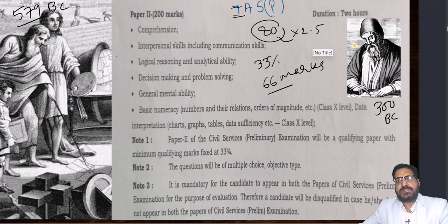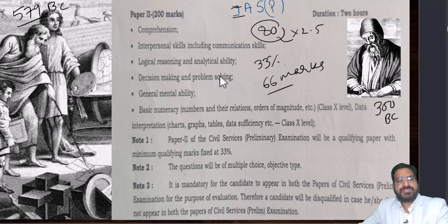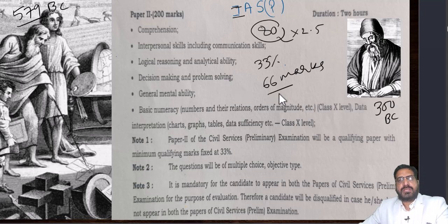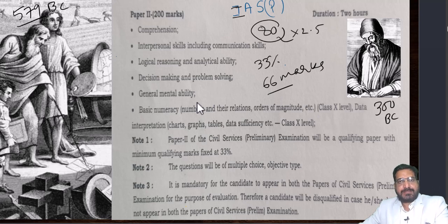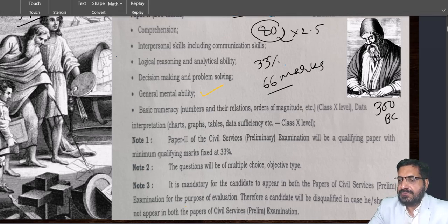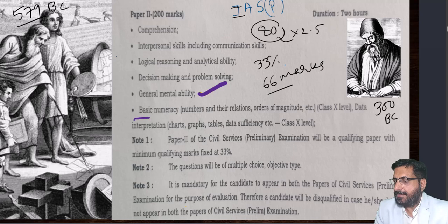You will be having 80 questions altogether. Each question carries 2.5 marks, altogether 200 marks. You are supposed to get only 33% marks in this paper, so that your Paper 1 will be considered for your qualification to Mains. That means in this paper of 200 marks, Paper 2, you have to get only 66 marks. Basic numeracy, general mental ability and basic numeracy — this part we are covering here.